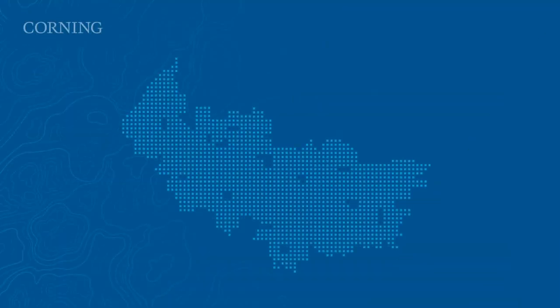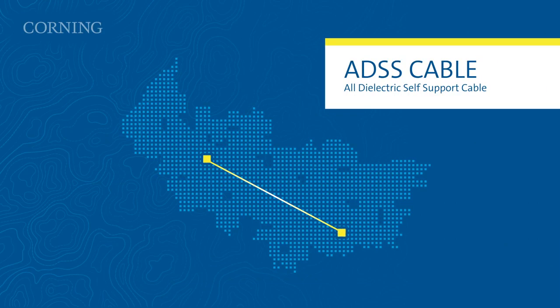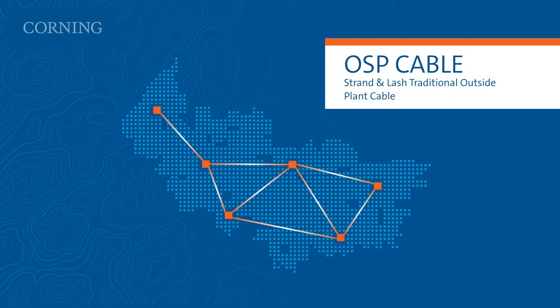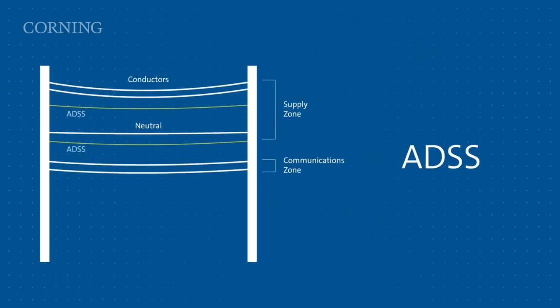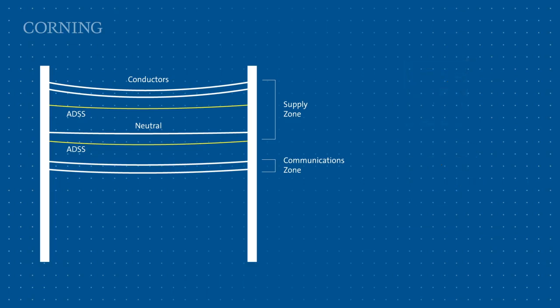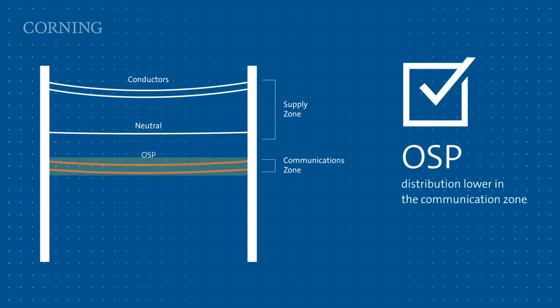As technology needs change, flexibility, quick service delivery, and easy fiber access are essential when building out an access network. Weigh the options between ADSS and strand-and-lash OSP deployments. If you liken the fiber network to your existing electrical plant, ADSS may be most appropriate in the transmission links in the supply zone, while strand-and-lash of OSP cables may be the better choice for the distribution lower in the communication zone. Whatever your goals, Corning delivers the cable that best suits your network needs.